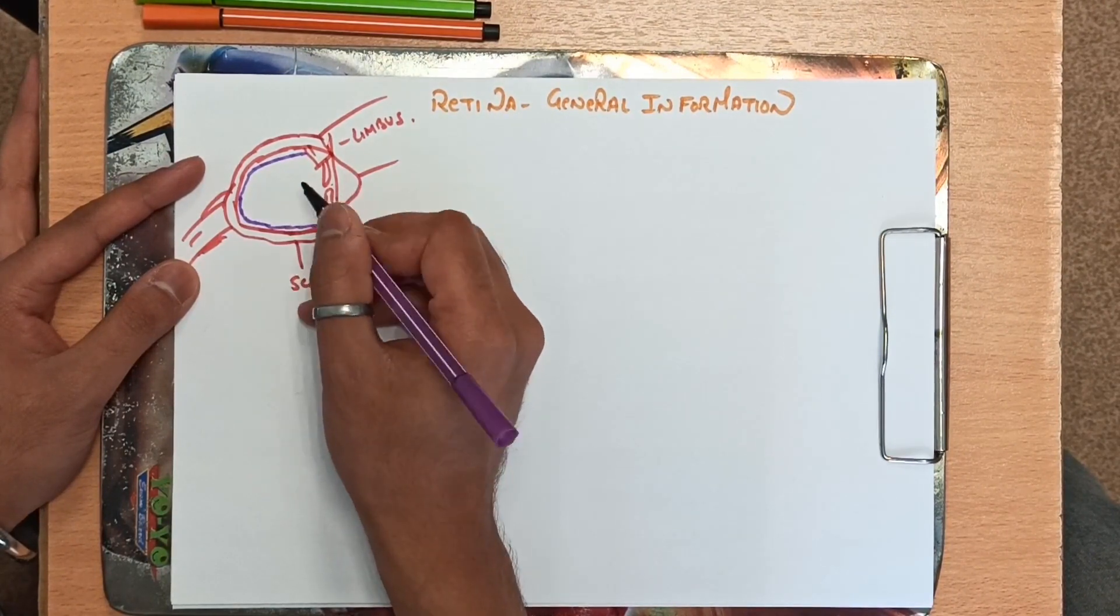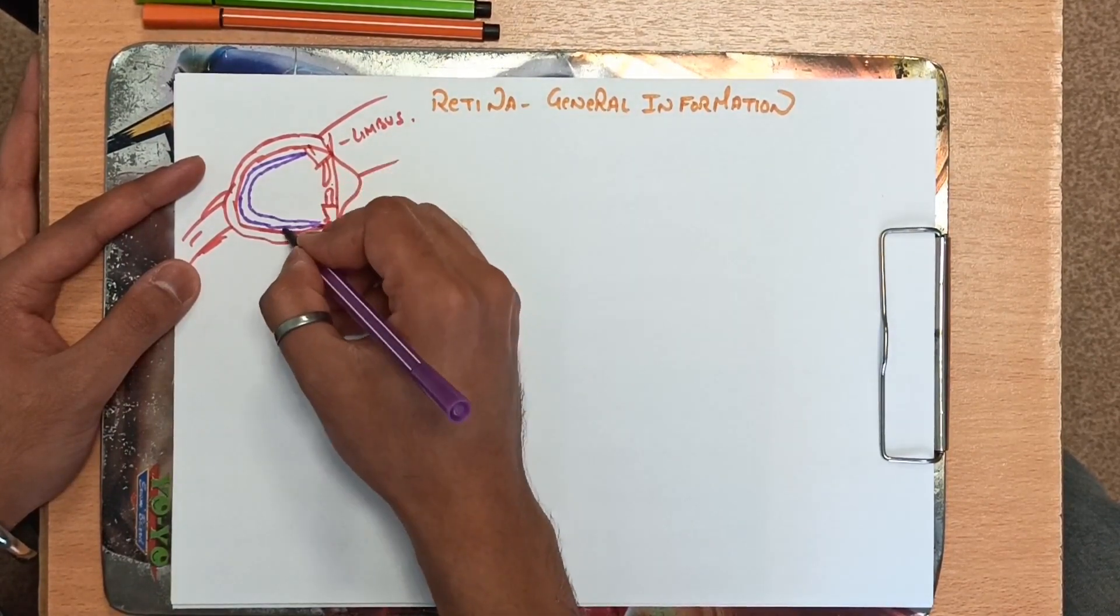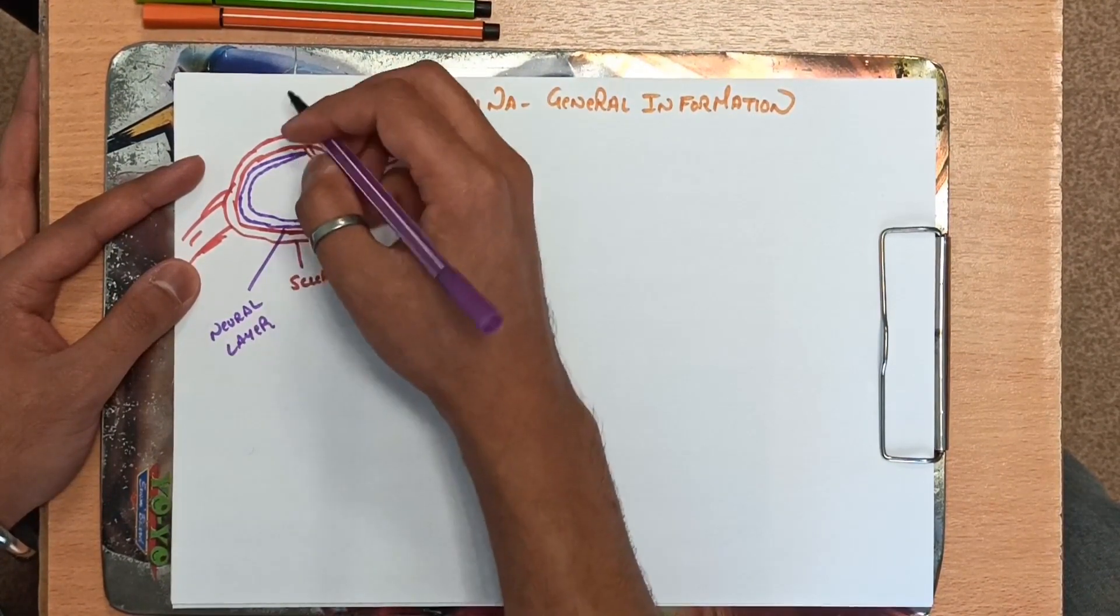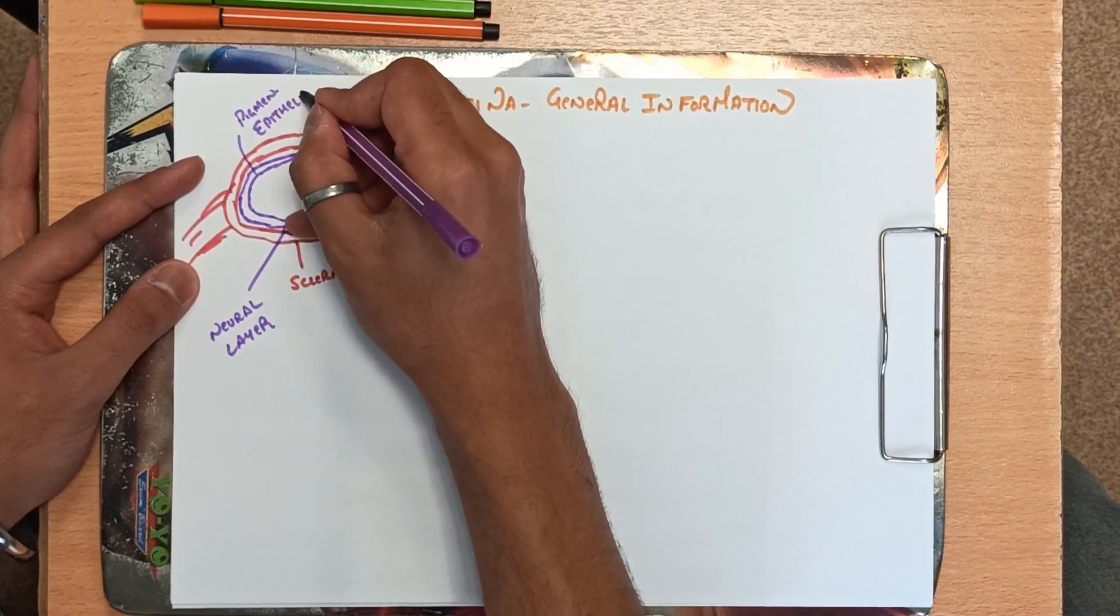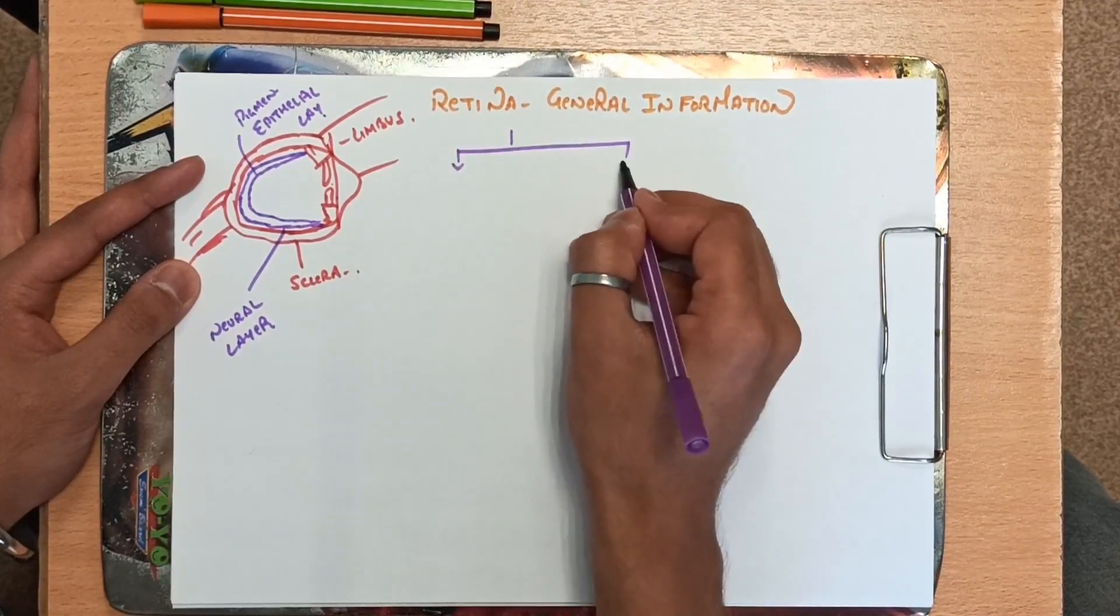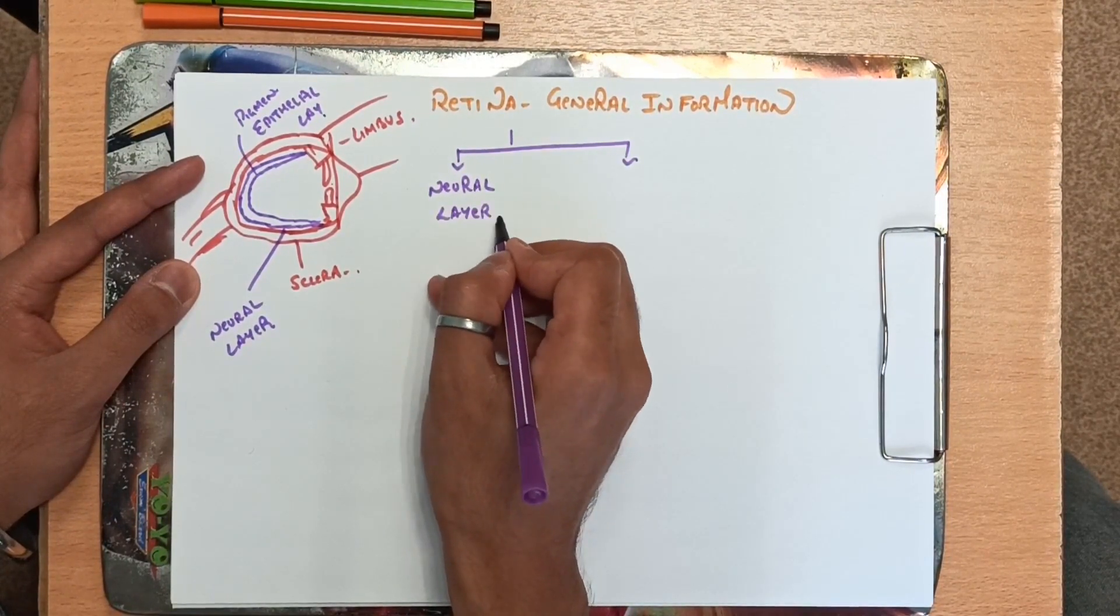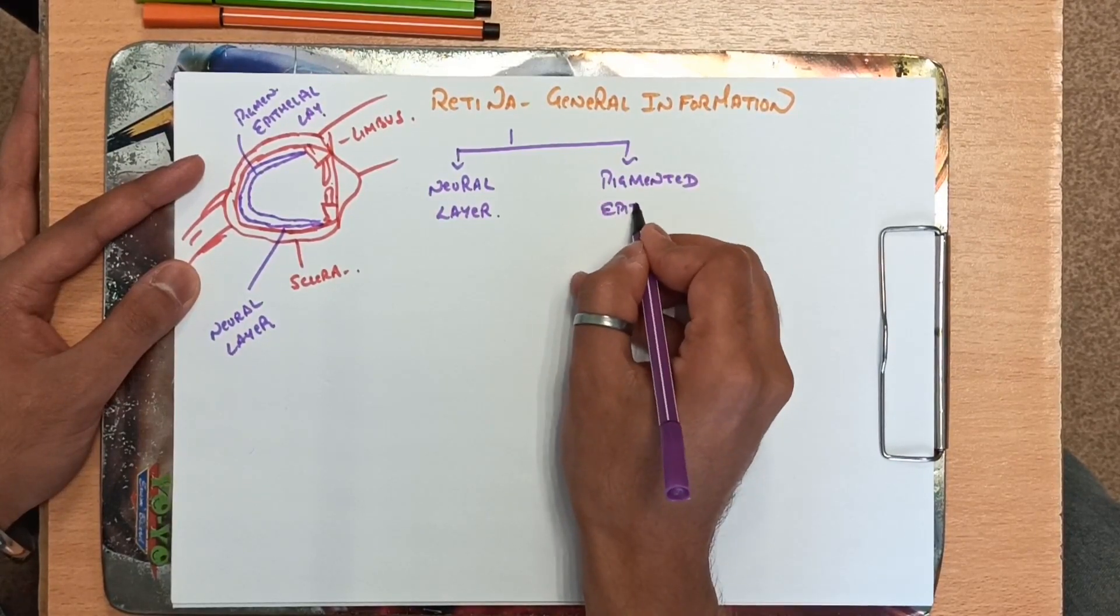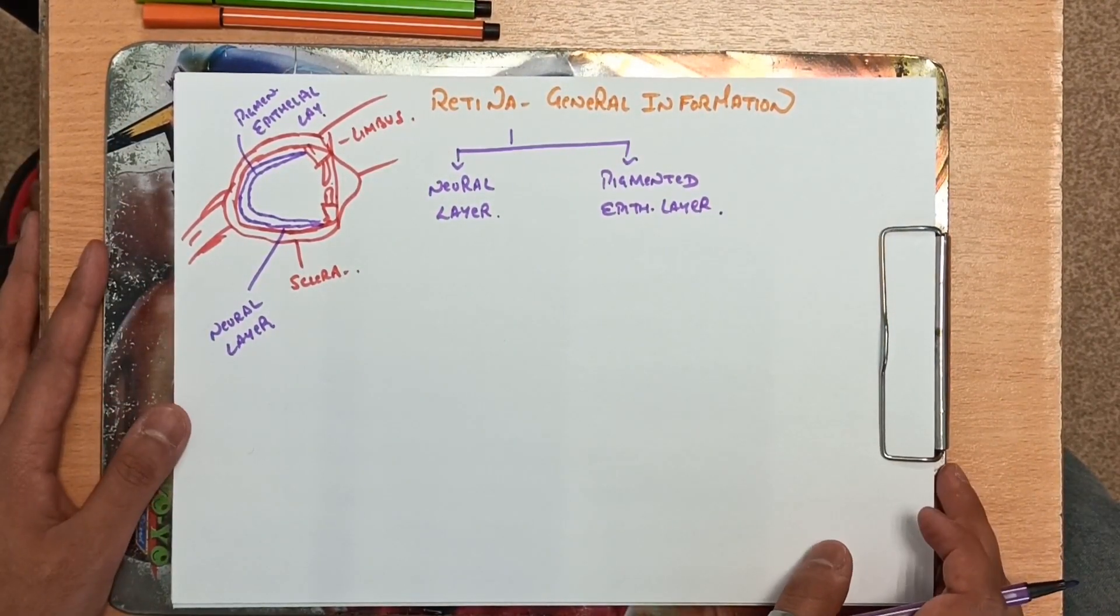Now inner to choroid there lies two layers of retina. This one is the neural layer and this is the pigmented epithelial layer. As in my previous videos I have already told you that retina is divided into two layers - the neural layer and the pigmented epithelial layer.